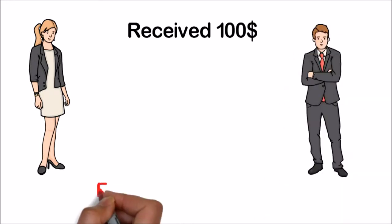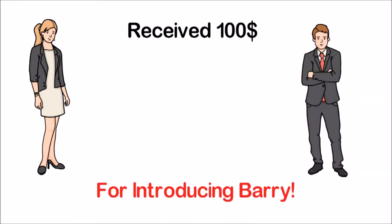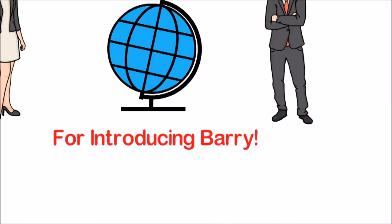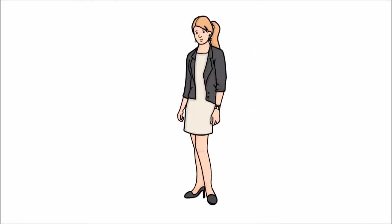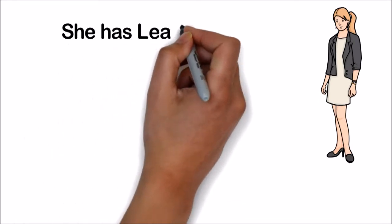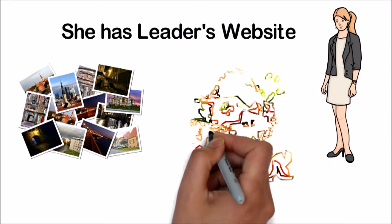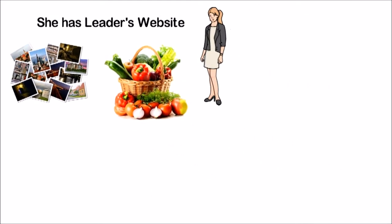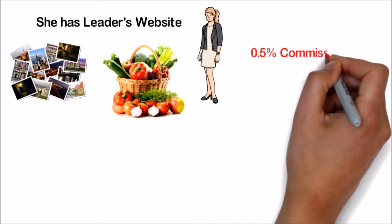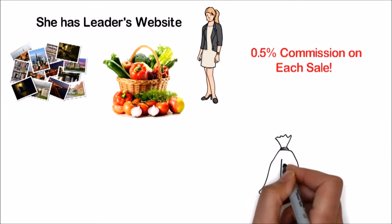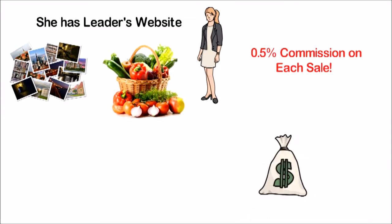Lisa received a $100 once-off payment for introducing Barry. This would have happened even if Barry had lived in another country. However, in this scenario, she lived near him. Lisa, because she has a leader's website, receives commissions not only for photo editing, but now for online sales for this fruit and vegetable business. Lisa receives a 0.5% commission on all fruit and vegetables sold online. Lisa and people above her for eight levels receive a portion of the group bonus.